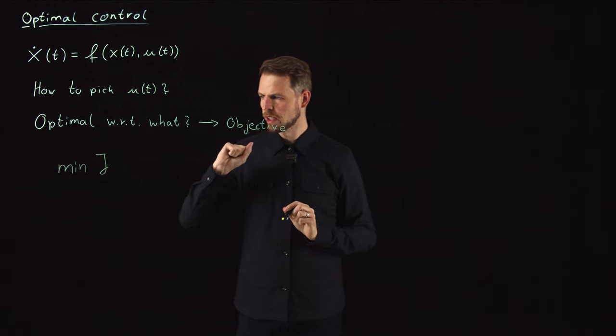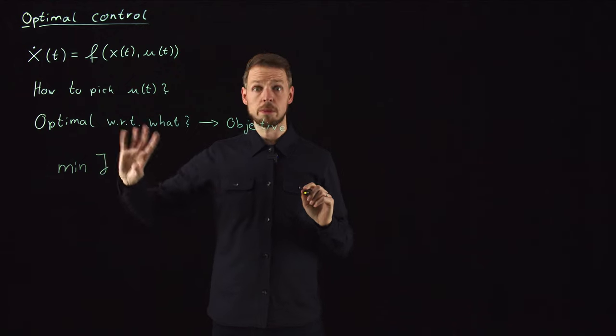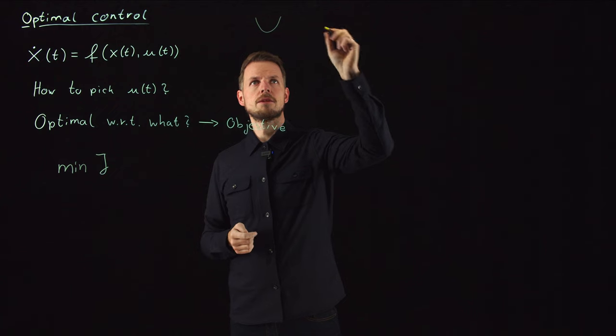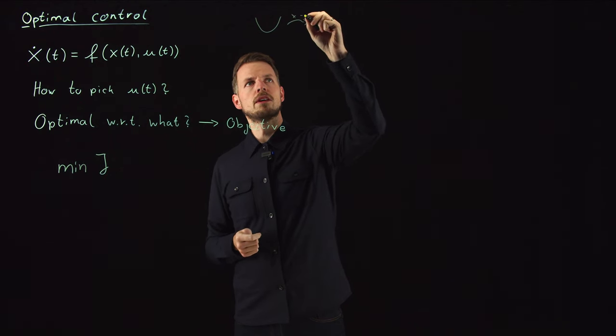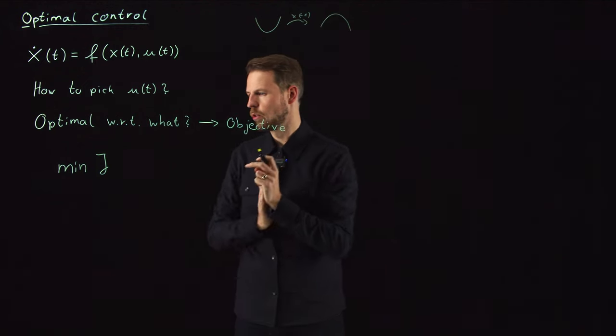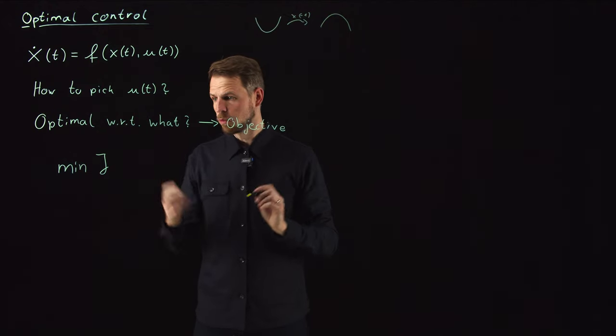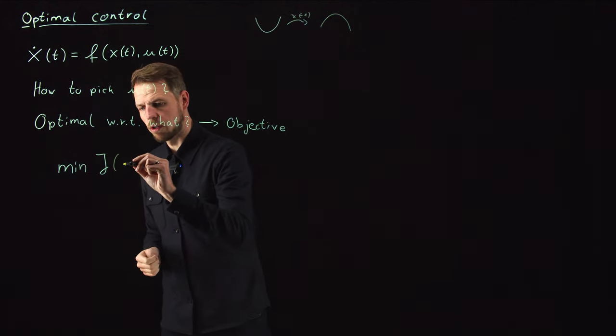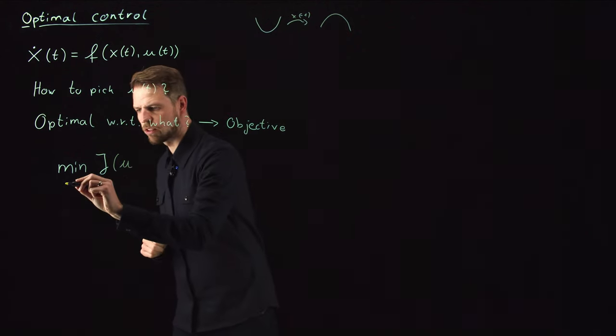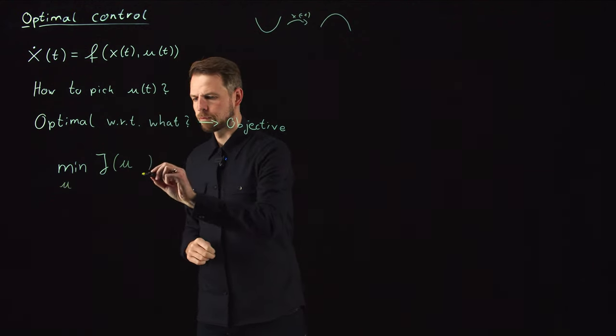What do we want to pick? We want to pick U. So our objective function depends on U, and we minimize over U.